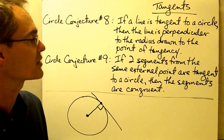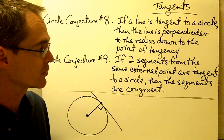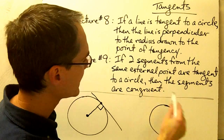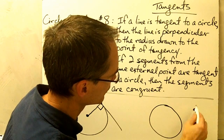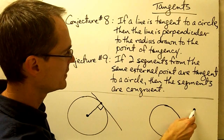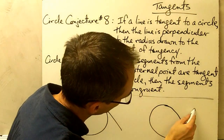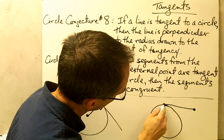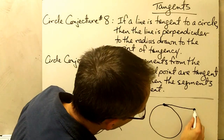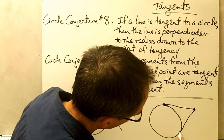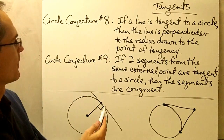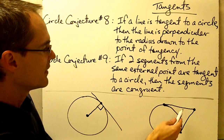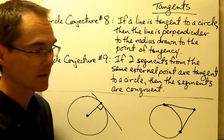Circle Conjecture number 9 says if two segments from the same external point are tangent to a circle, then the segments are congruent. Here I need a picture of a circle and an external point — let's give me an external point right here. If two segments from this external point are tangent to a circle, here's one segment I can draw that touches that circle in one point, and here's another segment that is also tangent to that circle. So I've got two segments from the same external point tangent to this circle, and according to this conjecture, these two segments are congruent.